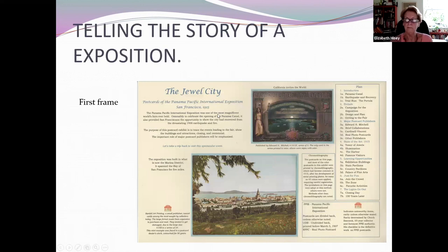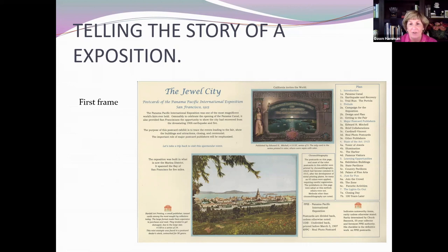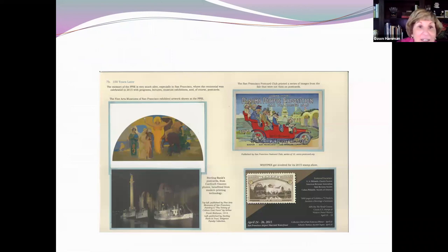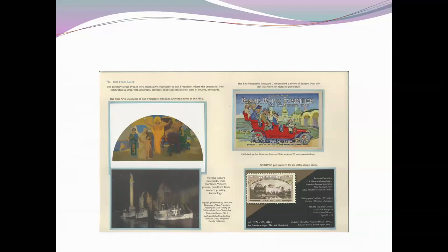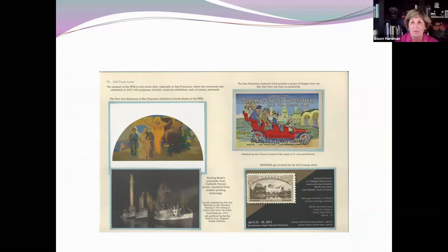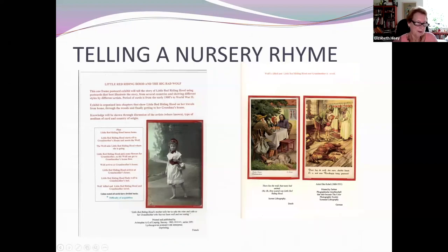This is about the Panama Pacific International Exposition — a big world's fair in 1915 in San Francisco. This is a large exhibit — eight frames — because there's a big story to tell. There's the title page, and the epilogue shows postcards produced for the 2015 centennial celebration. The one in the lower right corner is from WestPex, where they celebrated the fair and showed the stamp that was issued at the fair.